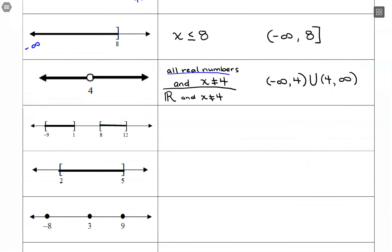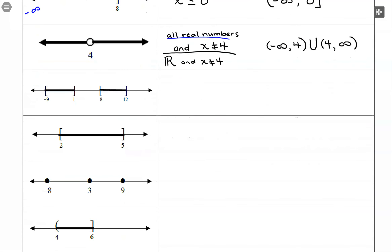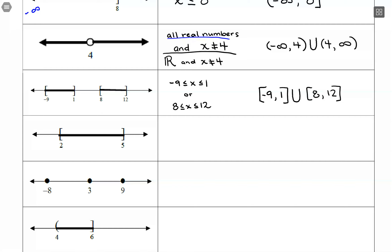This next piece shows two intervals. We have negative 9 to 1 including both endpoints, so −9 ≤ x ≤ 1, and then a second interval from 8 to 12, so 8 ≤ x ≤ 12. In interval notation, that's [−9, 1] union [8, 12], using square brackets throughout since all endpoints are included.